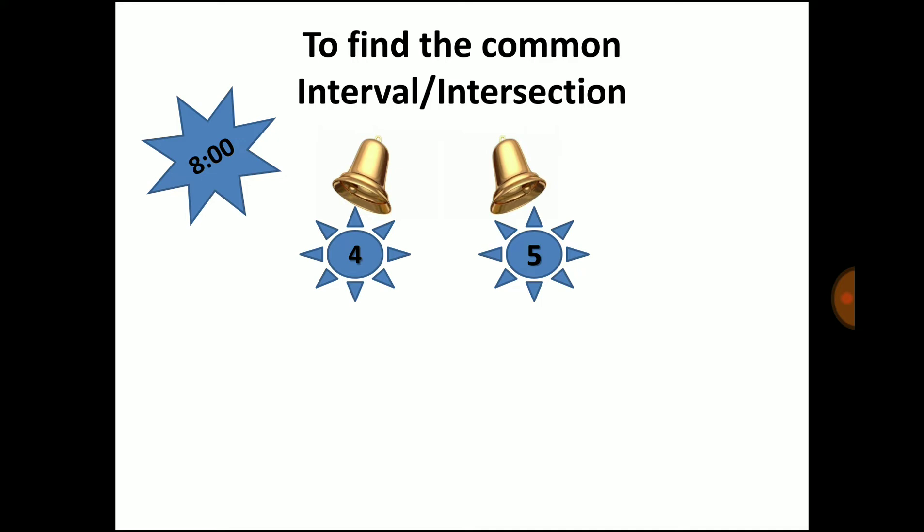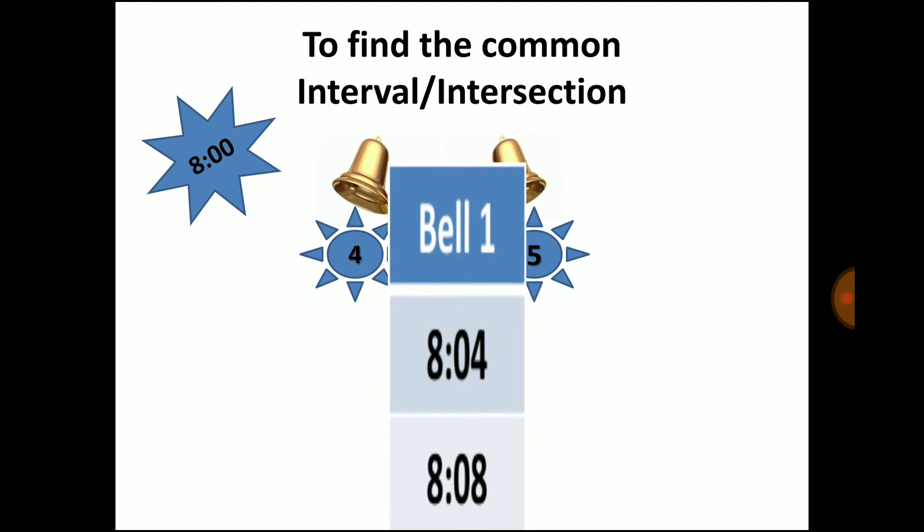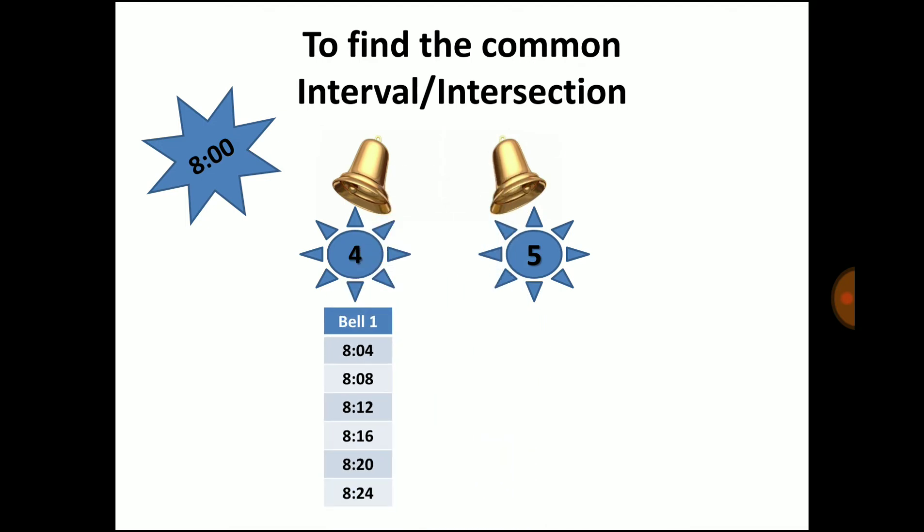In scenario 1, in the scenario of bell 1 the first bell ring after 8 AM is 8:04 AM, second bell rings at 8:08 AM because here the interval is 4 minutes, then the third bell rings at 8:12, next bell at 8:16, then 8:20, then 8:24 AM and so on.